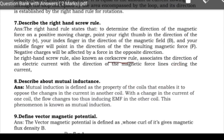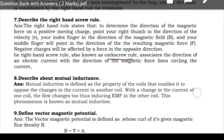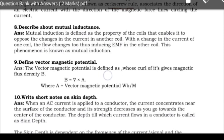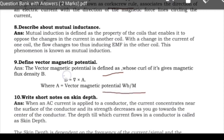Next: define vector magnetic potential. The vector magnetic potential A is defined as the quantity whose curl gives the magnetic flux density B. That is, B = ∇ × A, where del cross A equals the magnetic flux density. The unit of vector magnetic potential is Weber per meter.